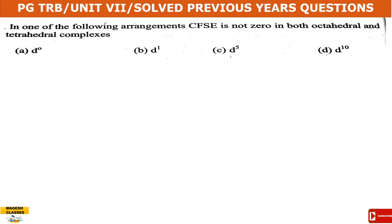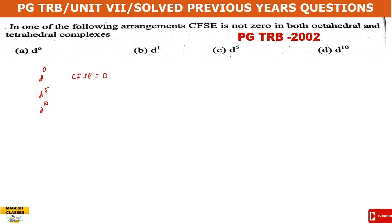Next question: In which of the following d-electron configurations is CFSE (Crystal Field Stabilization Energy) not zero in both octahedral and tetrahedral complexes? For d⁰, CFSE is zero. For d¹⁰, the orbitals are completely filled, and CFSE is also zero. For d⁵ high spin, the configuration is half-filled, giving CFSE equal to zero.